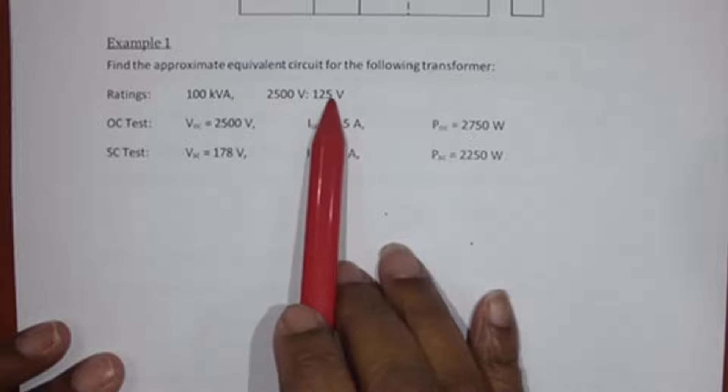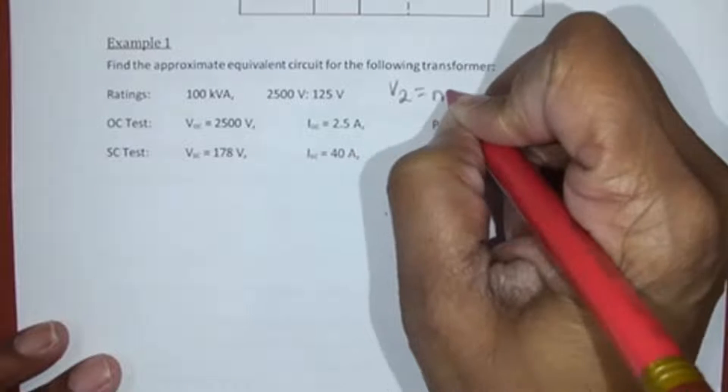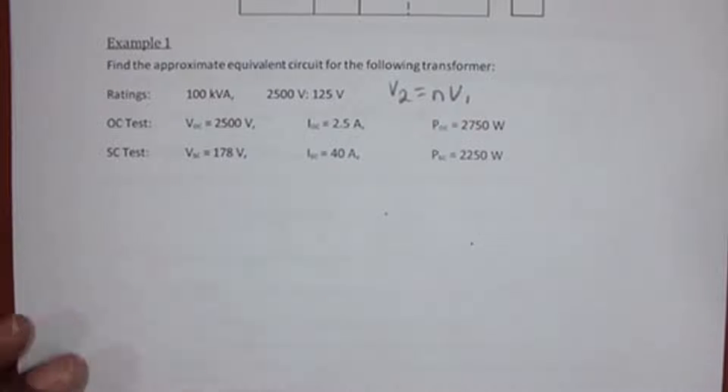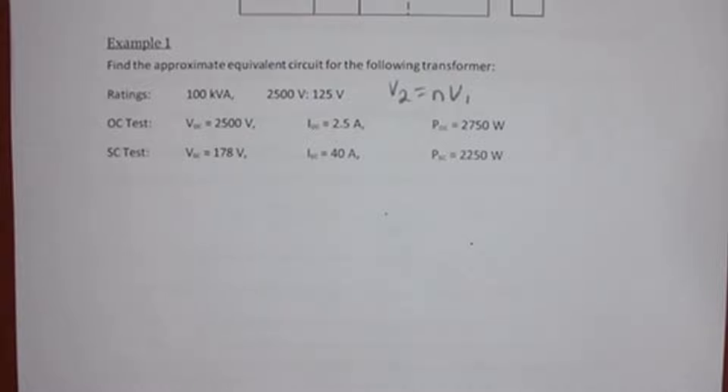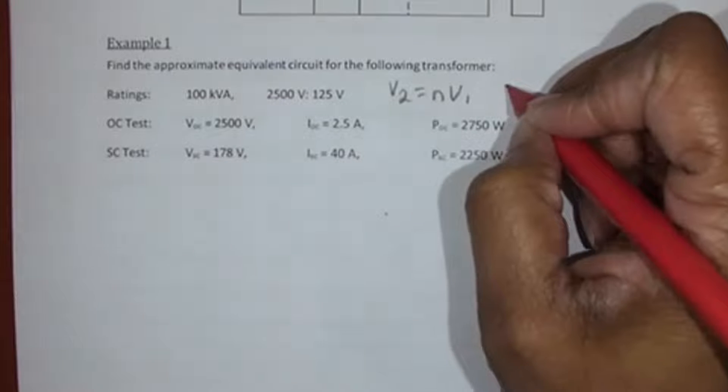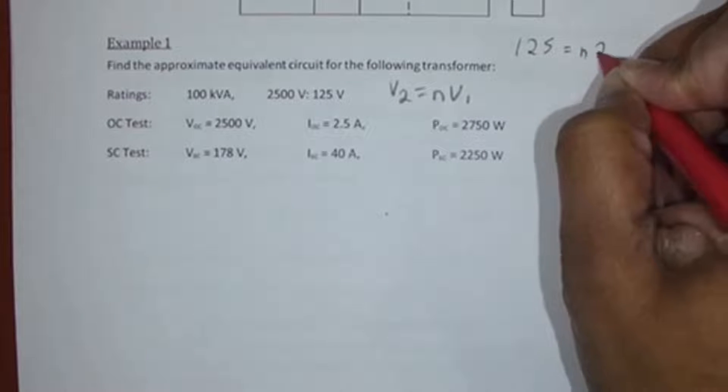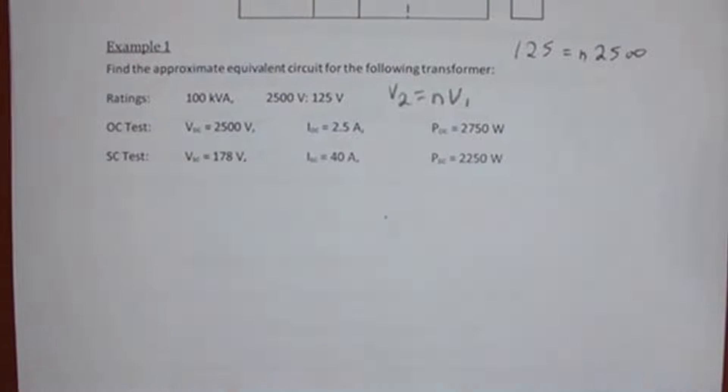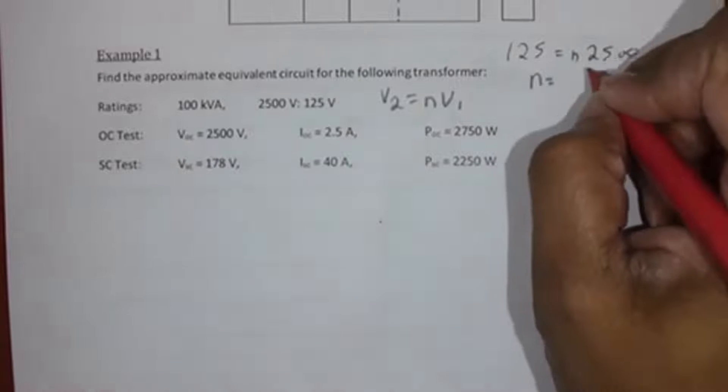2500 volts to 125 volts. You can always get the N value or the A value. Because V2 equals N times V1, so that means that 125 equals N times 2500. So for this example, N would be equal to 1 over 20.